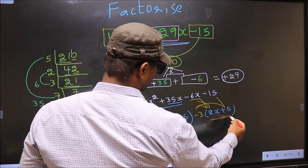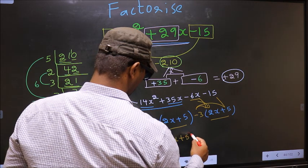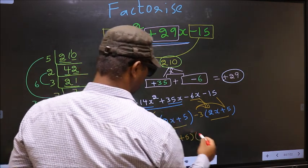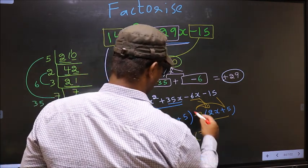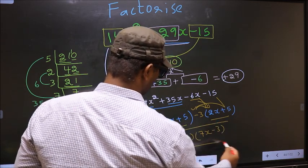Now you take out (2x + 5) common. So here you have 7x and here you have -3. This is your answer.